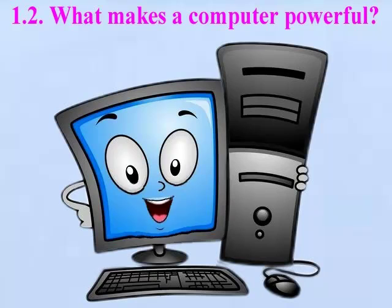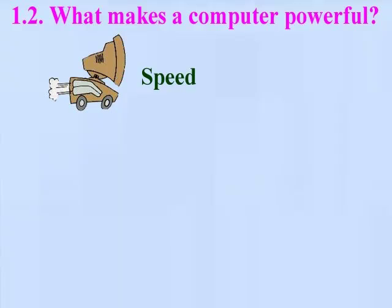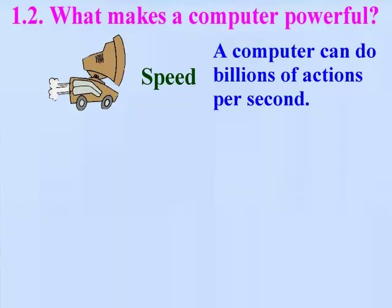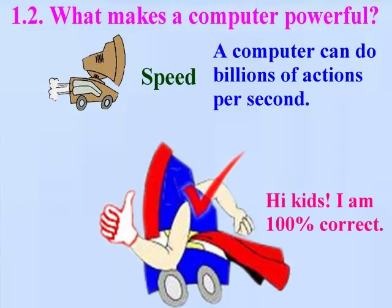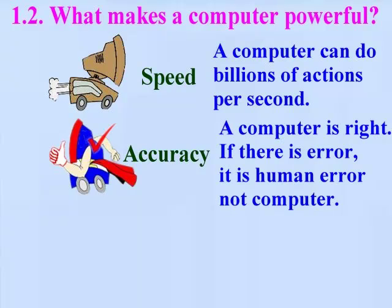What makes a computer powerful? Speed: A computer can do billions of actions per second. Accuracy: A computer is always right. If there is an error, it is human error, not the computer's.